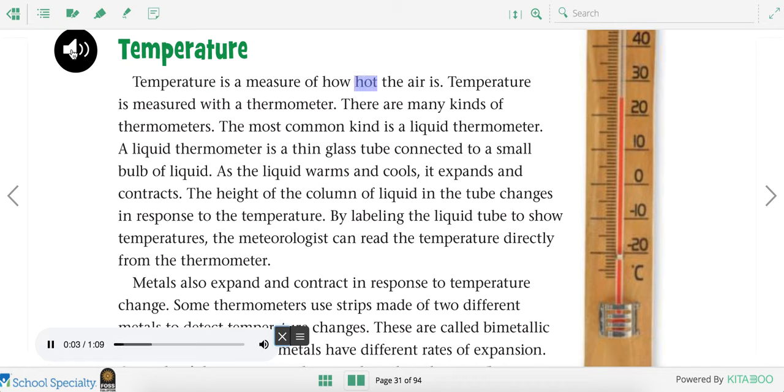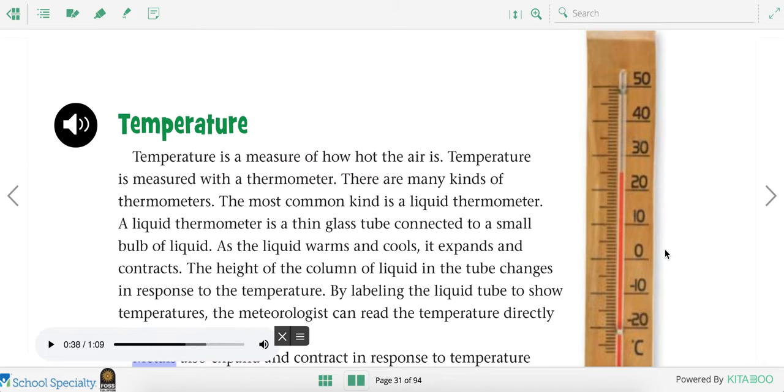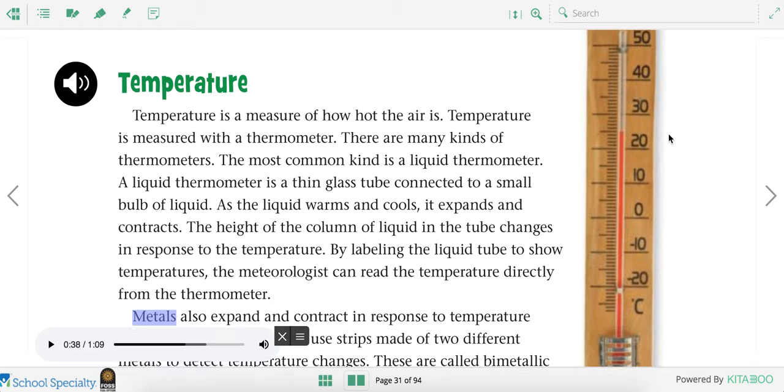Temperature is a measure of how hot the air is. Temperature is measured with a thermometer. There are many kinds of thermometers. The most common kind is a liquid thermometer. A liquid thermometer is a thin glass tube connected to a small bulb of liquid. As the liquid warms and cools, it expands and contracts. The height of the column of liquid in the tube changes in response to the temperature. By labeling the liquid tube to show temperatures, the meteorologist can read the temperature directly from the thermometer. The amount of red liquid tells you how hot or cold it is in the air. That's how we know the temperature.